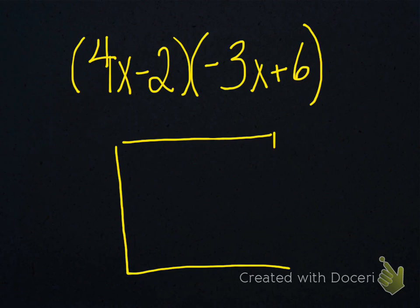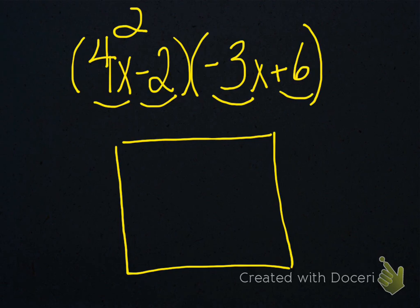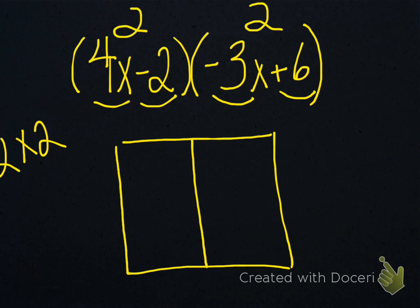The box method starts with drawing a box. The way you decide how to break the box down is you look at what polynomials you have. We have a binomial — that's two terms — and here's another binomial — another two terms. So it's a two by two box, and you want to make a box divided into two rows and two columns.